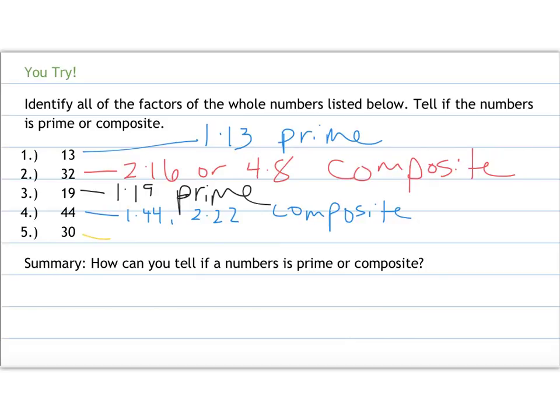30 then. 30 again I can see is 1 times 30. It ends in a 0, so I know it's divisible by both 10 and 2. So it would be 2 times 15 as well as 3 times 10 is the same as 30. So therefore that is a composite number.